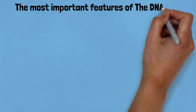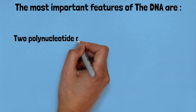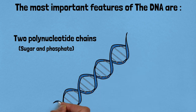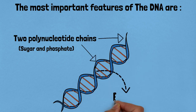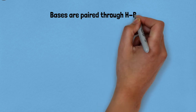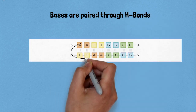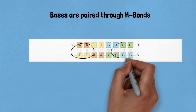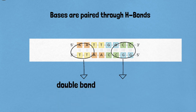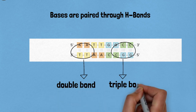The most important features of the DNA are: it has two polynucleotide chains, the backbone is made of sugar and phosphate, and the bases project inside. The backbone is basically the two strands that wind together like a twisted ladder. The bases inside the strands are paired through hydrogen bonding.